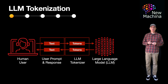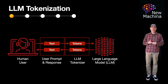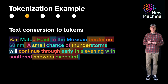So what exactly is a token? Tokens are typically represented as numbers. Each token corresponds to a unique identifier represented as an integer in the model's vocabulary, allowing the LLM to efficiently process and manipulate text.